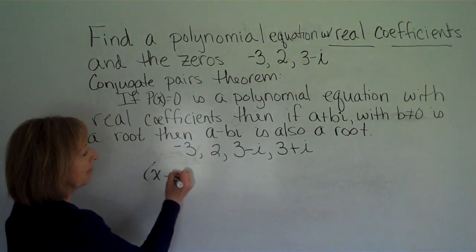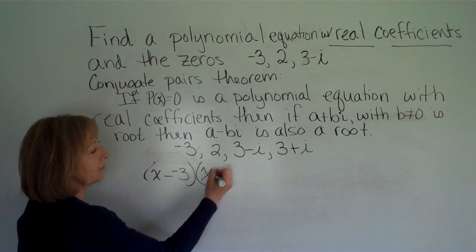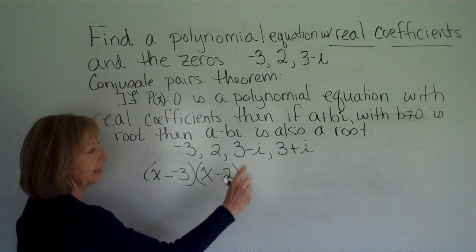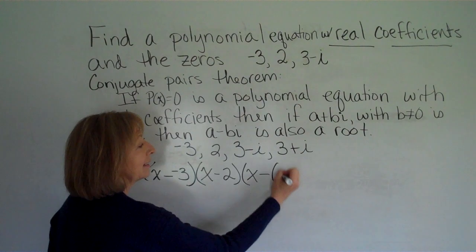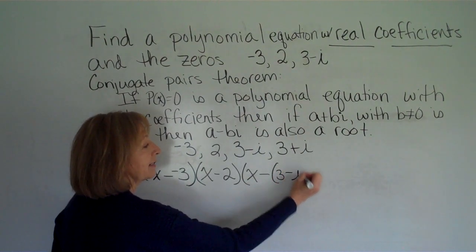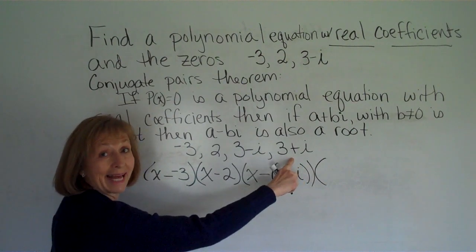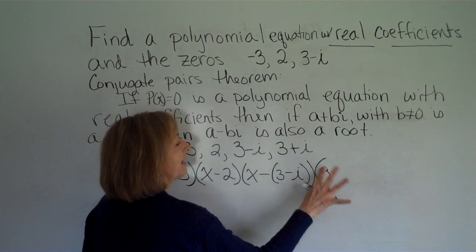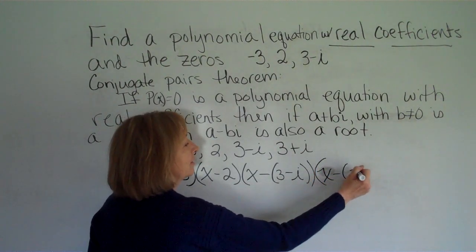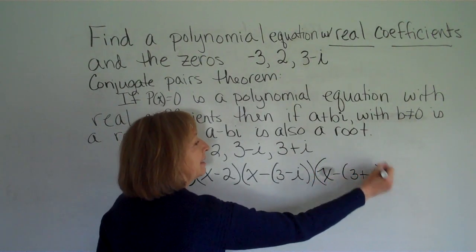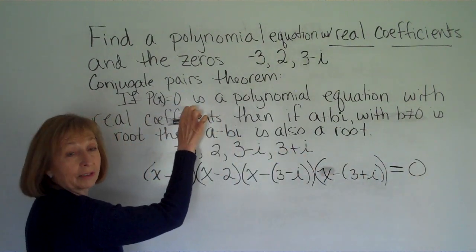then x minus negative 3 is a factor. If 2 is a root, x minus 2 is a factor. If 3 minus i is a root, x minus that quantity 3 minus i is a factor. And if 3 plus i is a root, x minus 3 plus i is a factor. And then equals 0 to get my polynomial equation.